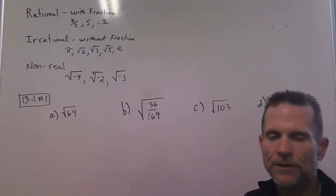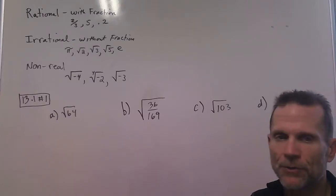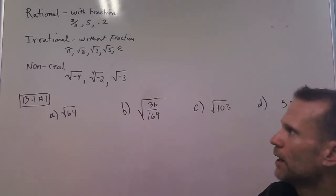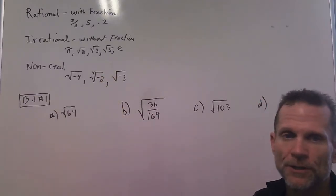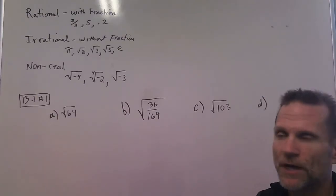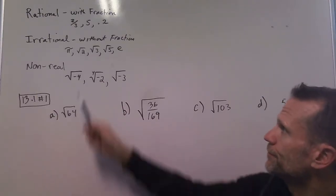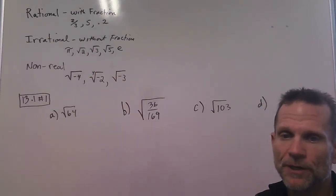Hi everybody, this is the start of Module 13. This first section is evaluating radicals. You might want to review these by looking a little deeper on the internet. We have rational numbers which can be written with a fraction: two-thirds, five over one, and 0.2 can be written as two over ten or one-fifth.